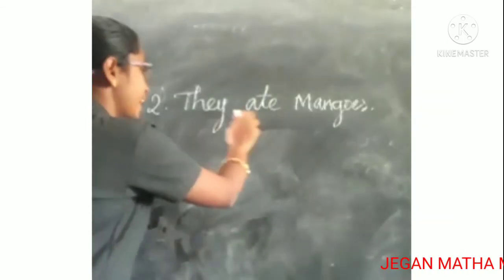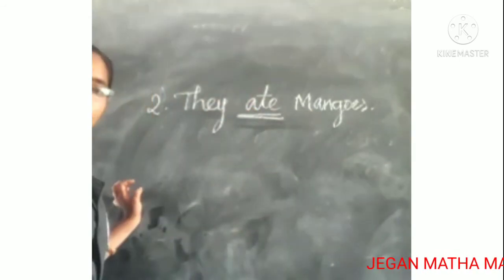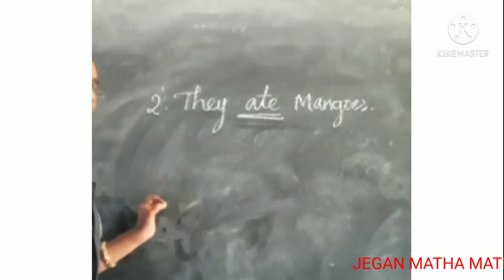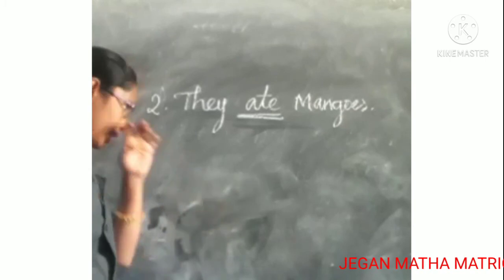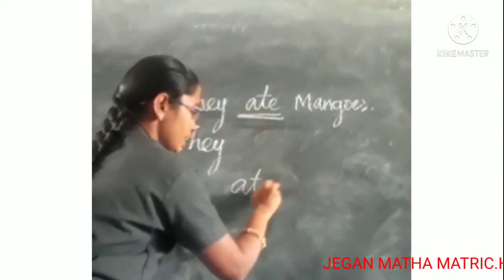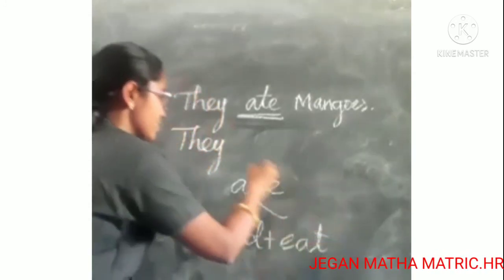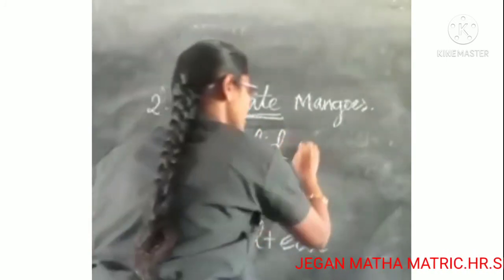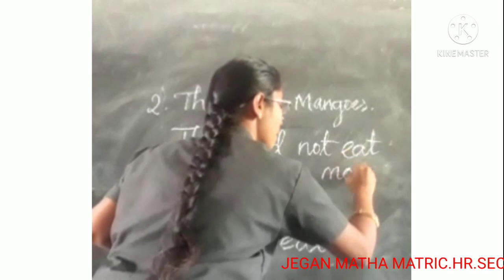Look at the next sentence: 'They ate mangoes.' The verb 'ate' is a past tense form. For past tense verbs, we use 'did' and the present form of the verb. 'Ate' divides as 'did + eat'. After 'did' we add 'not', so the answer is: 'They did not eat mangoes.'